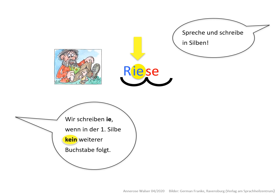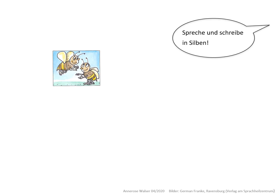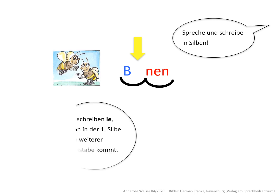Ich zeige dir ein zweites Beispiel. Bienen – spreche und schreibe in Silben. Wir schreiben IE, wenn in der ersten Silbe kein weiterer Buchstabe kommt. Auch hier bei Bienen ist in der ersten Silbe nach dem B das IE.